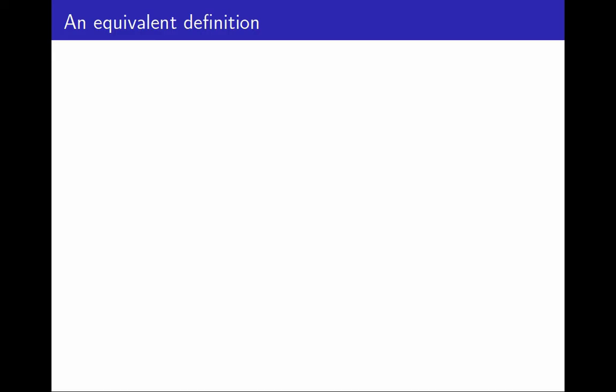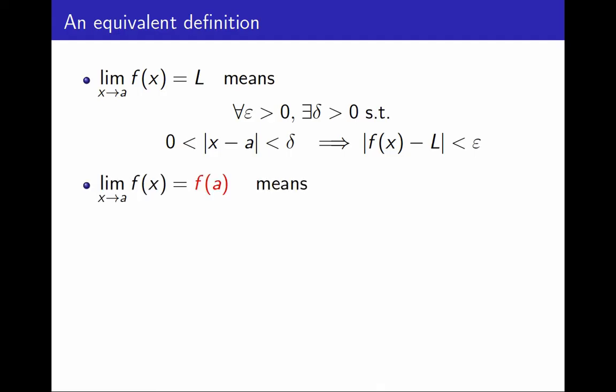Here is what happens if we do it. First, as a reminder, this is the definition of the limit as x approaches a is l. For a function to be continuous, the limit must not be just any number l, but specifically f(a). So let's simply change l into f(a).